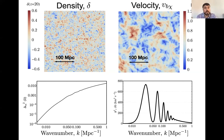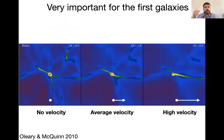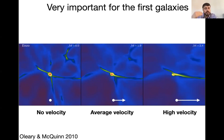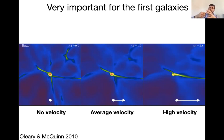Relative velocities are not just a good tracer — they're also important for the formation of the first galaxies. To form galaxies, baryons need to fall into dark matter halos. Simulations of galaxies in the early universe show that without relative velocity, baryons fall to the center of the dark matter halo, get overdense, and form stars. As you increase the velocity, some gas gets stripped away. If the velocity is very high, almost all the gas leaves the galaxy, so you form fewer stars. This is something we can see in 21-centimeter.